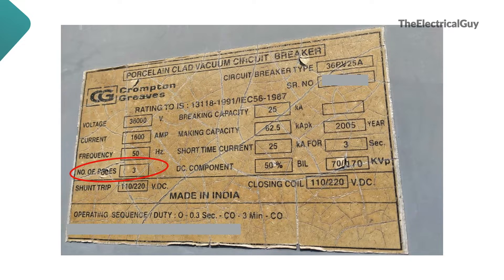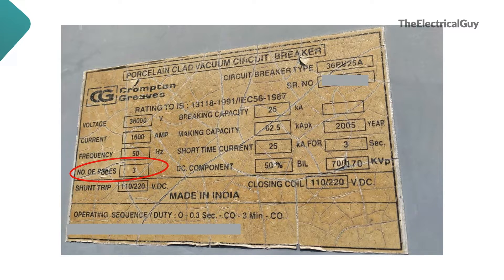So the breaker is a 3-phase breaker, i.e. R, Y and B. You might ask whether all breakers must be 3-phase by default — that's not the case. In a few cases, single-pole or single-phase breakers are also used. Also, in railway applications, two-pole or two-phase breakers are used.